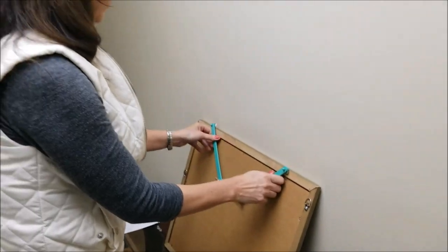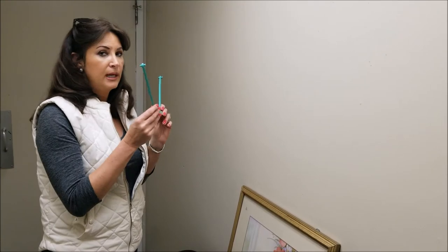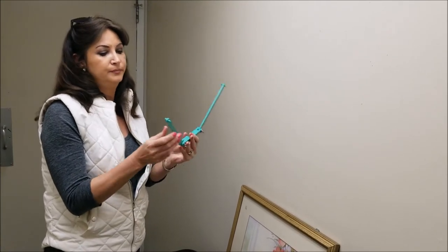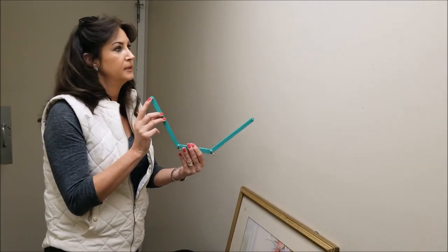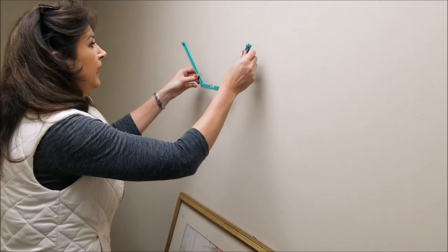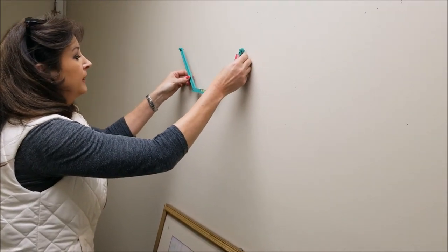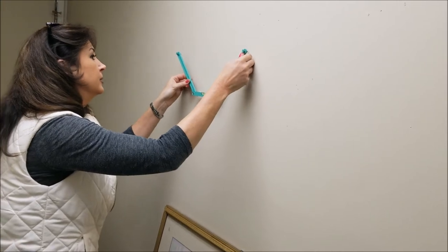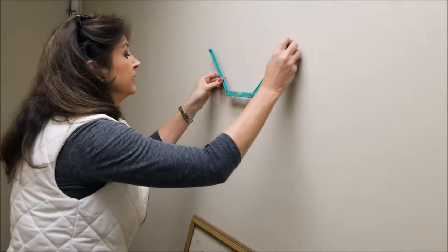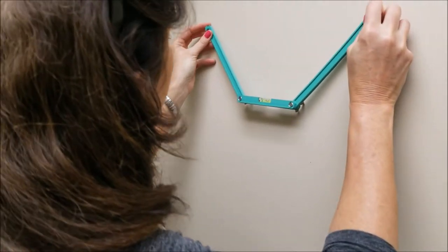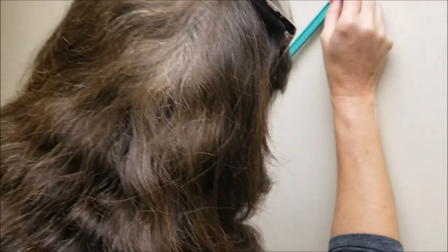So it looks pretty level to me, so I'm going to take this out. Now I'm going to turn it around. You see where the point is? Before I poke a hole, I'm going to make sure that my bubble is in the center. It looks like it is, so I'm going to take this and poke my holes gently.